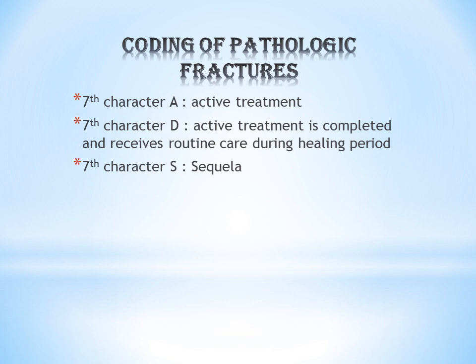Next is coding of pathologic fractures. The pathologic fracture, which occurs due to an underlying condition, comes under M series. Now let's discuss the seventh character of pathologic fractures. ICD codes have a maximum of seven characters. The usual seventh characters for pathologic fractures are A, D, and S.